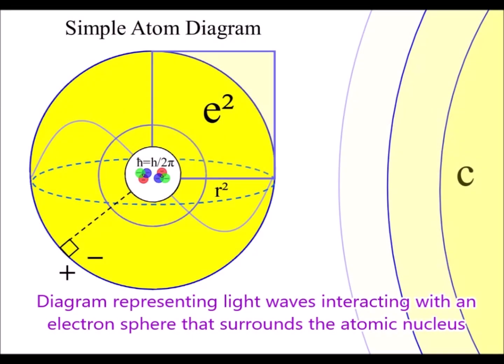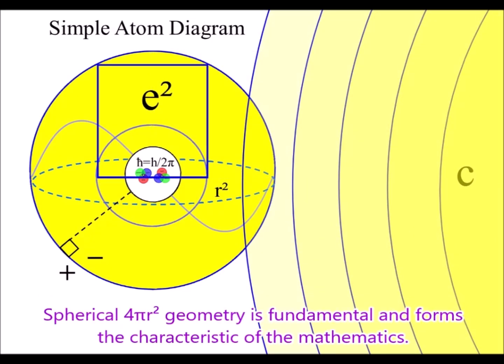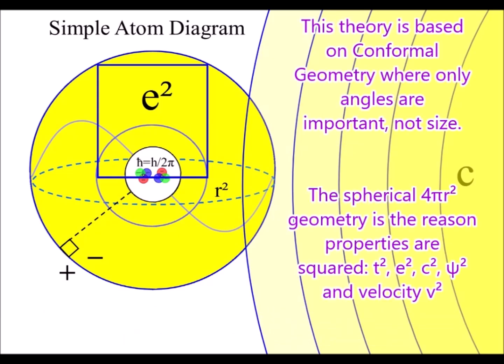When we have the absorption of light, the energy levels drop, but they cannot drop below the nucleus of an atom. This geometry forms the Planck constant, h, divided by 2pi, representing the circumference at the smallest part of the process.